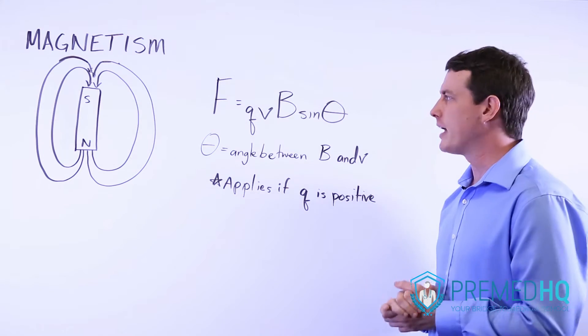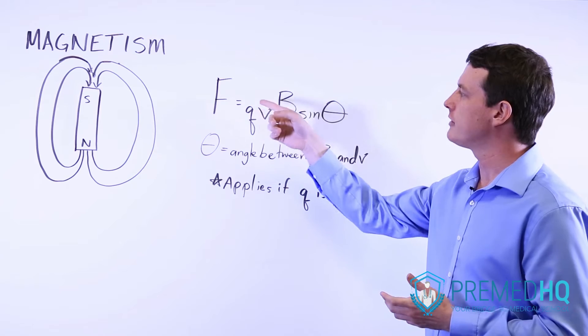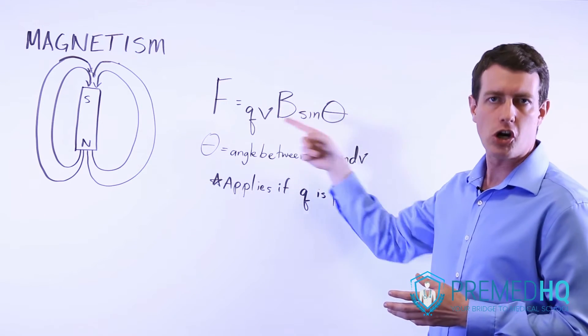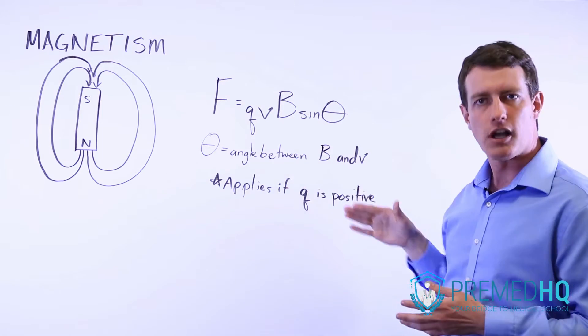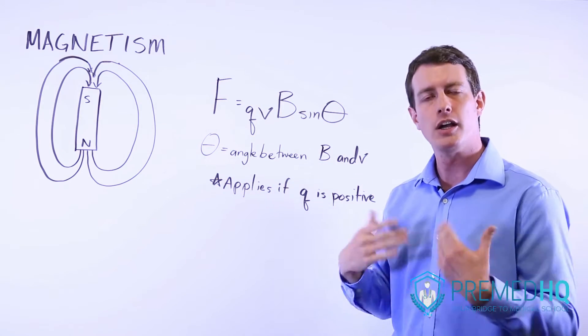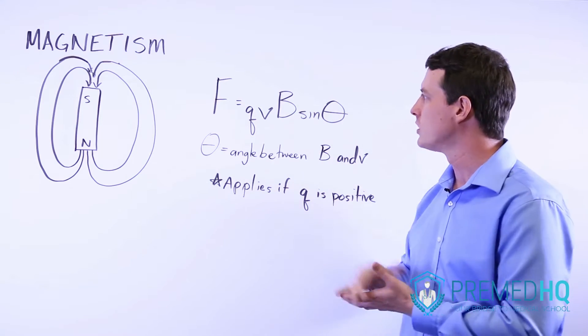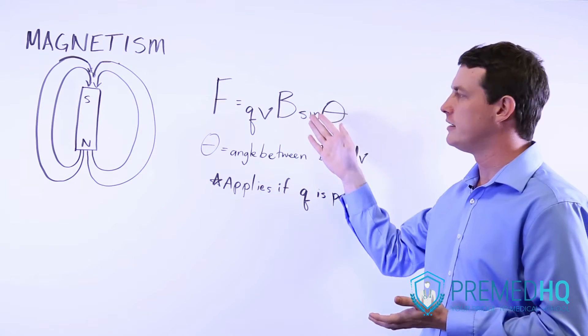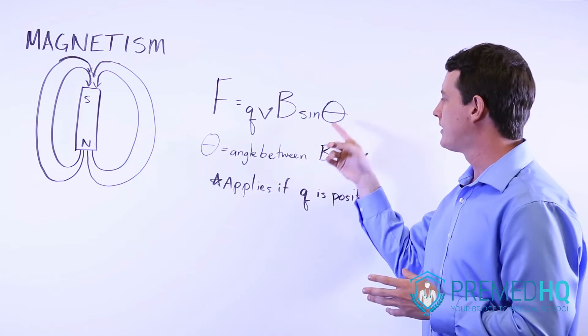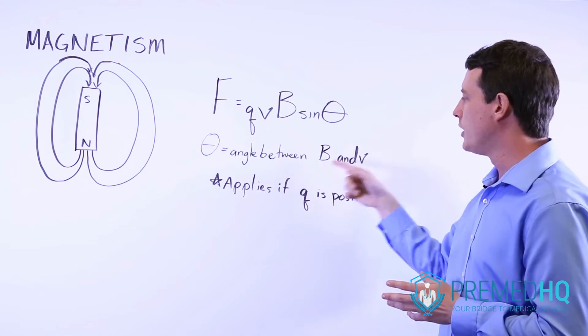The formula for magnetic force is F equals QVB sine theta, where Q is the charge of the object, V is the velocity of that moving object. A charged object must be moving in order for it to generate a magnetic force. B is the direction and strength of the magnetic field, and theta is the angle between B and V.